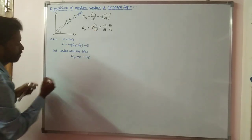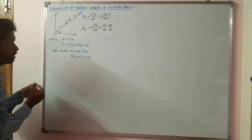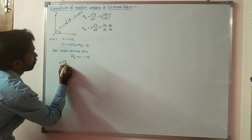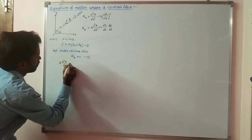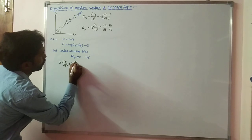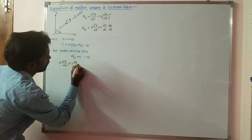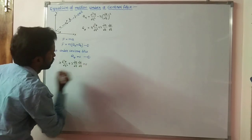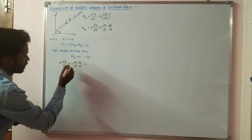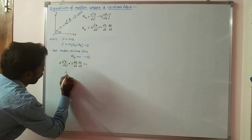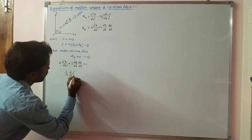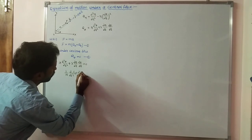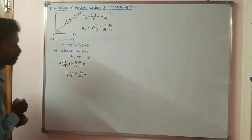What is the value of transverse acceleration? It is: r·(d²θ/dt²) + 2·(dr/dt)·(dθ/dt) = 0. This can be written as (1/r)·(d/dt)(r²·dθ/dt) = 0.